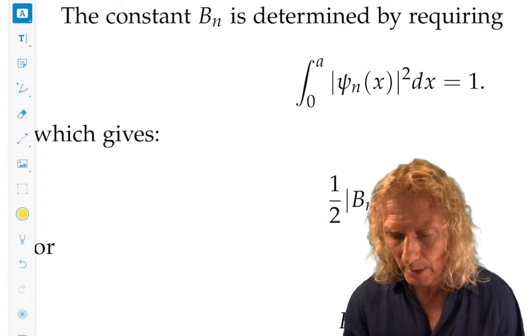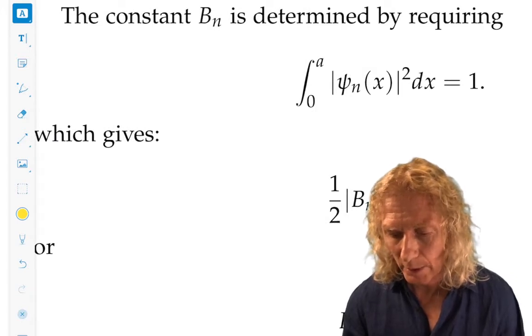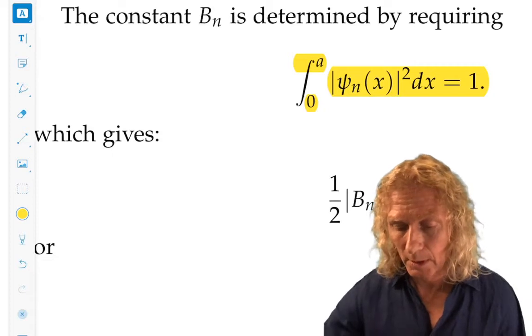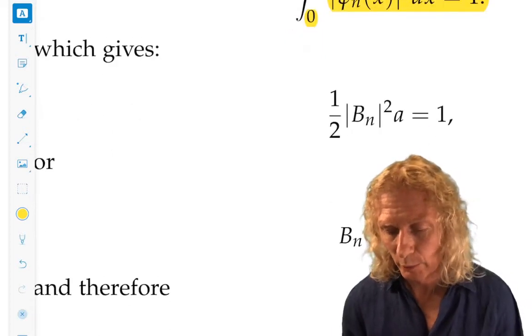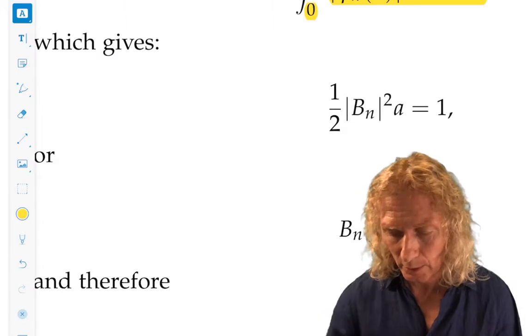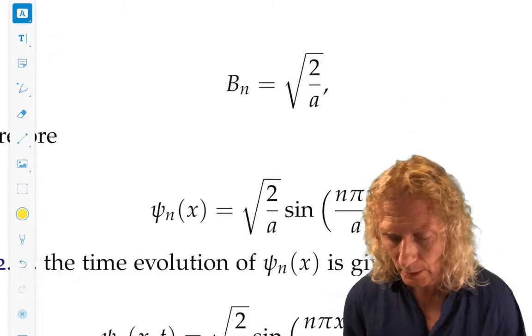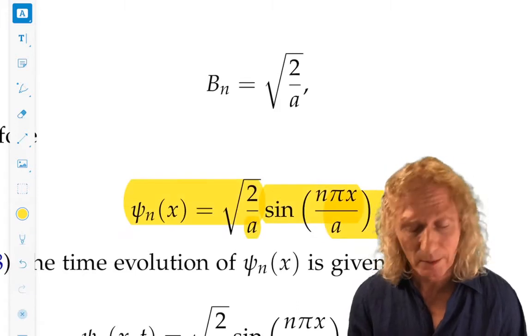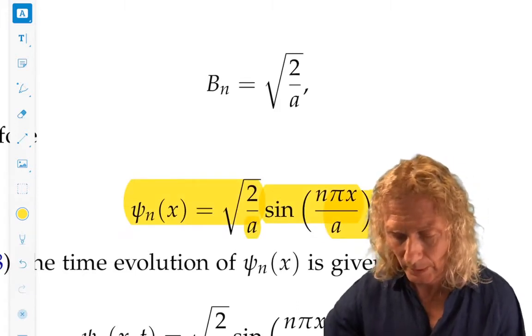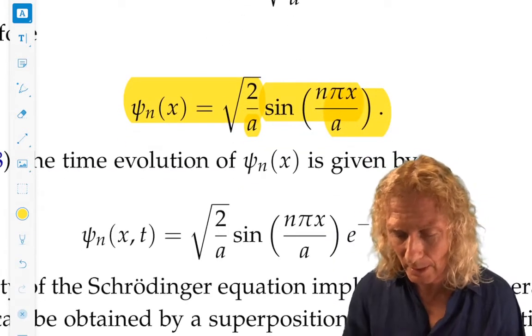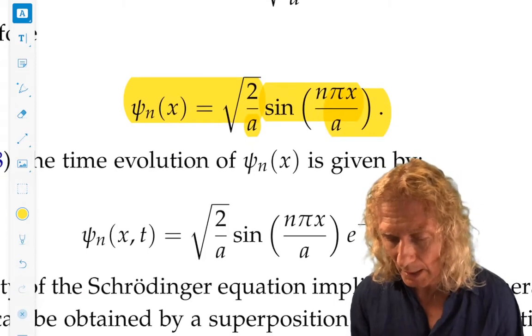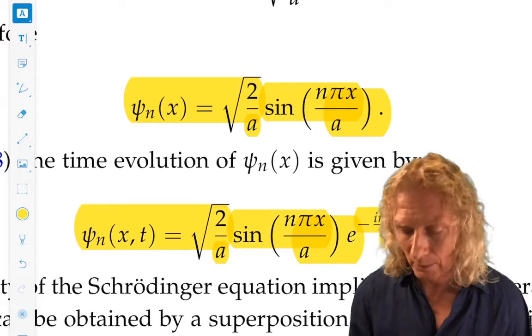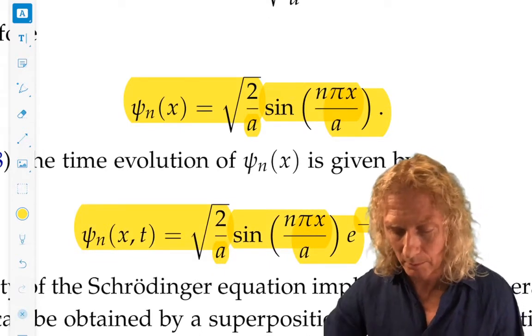So, we demand that the integral of the modulus squared of the wave function in the domain must be one. We can easily check through that calculation, and you find that the nth eigenstate, eigenstate corresponding to the nth eigenvalue is given by this expression. And if we want to put in the time dependence, that's easy to do, and we can do that here.